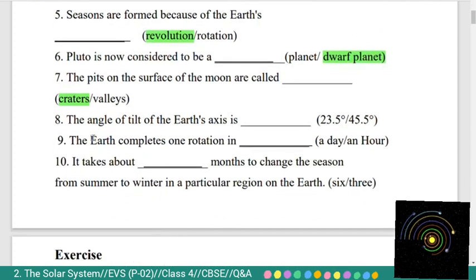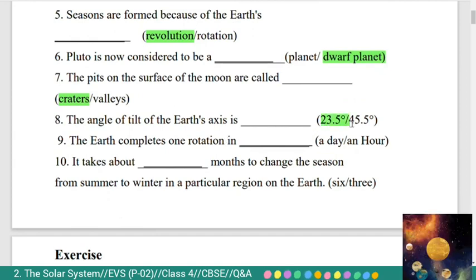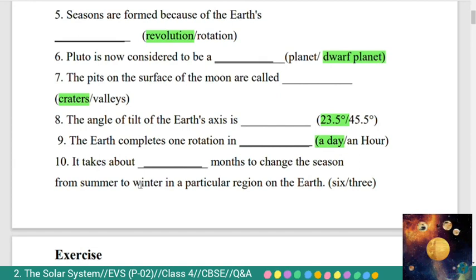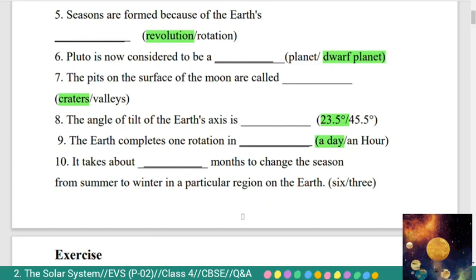Eighth: the angle of tilt of the Earth's axis is 23.5 degrees. Ninth: the Earth completes one rotation in a day, not an hour — answer is a day. Tenth: it takes about dash months to change the season from summer to winter in a particular region on the Earth. The answer is six months.